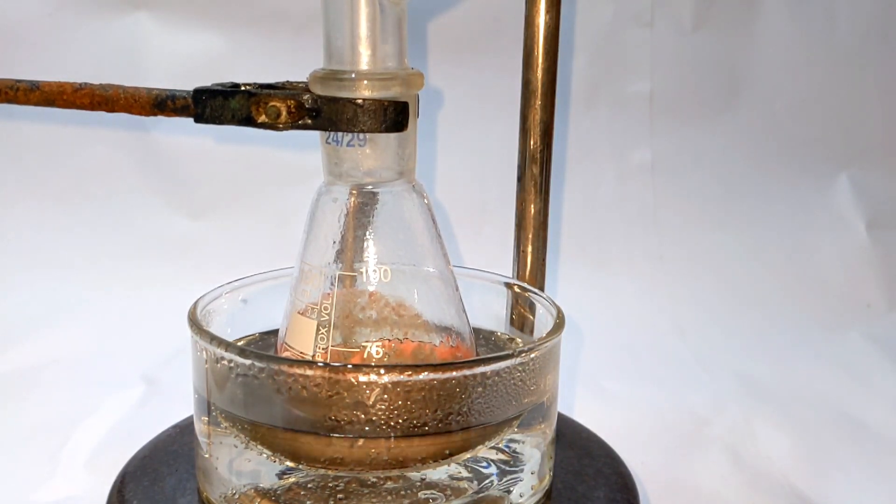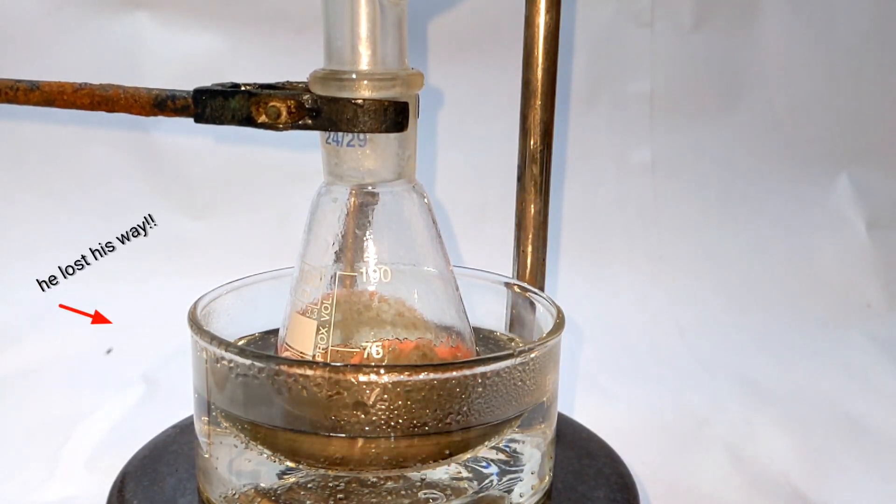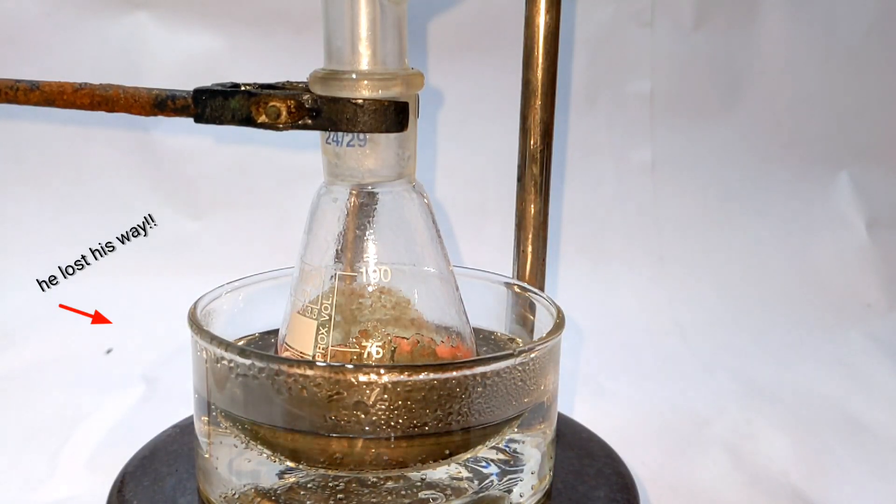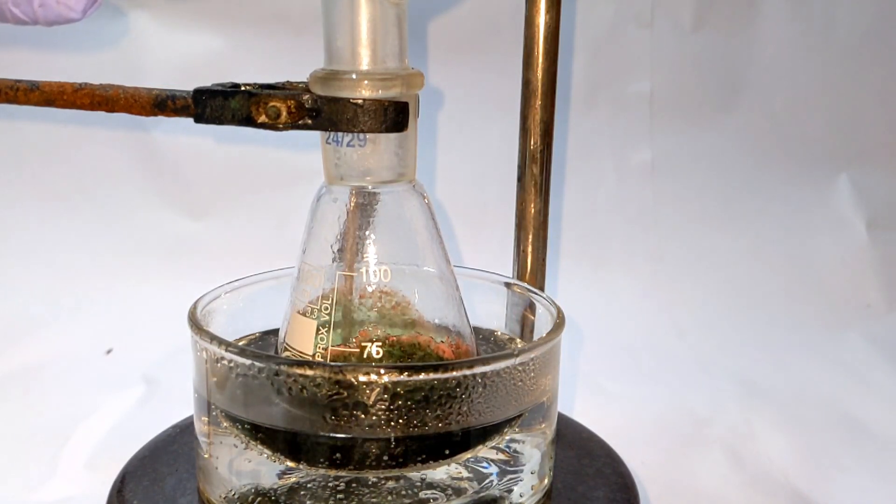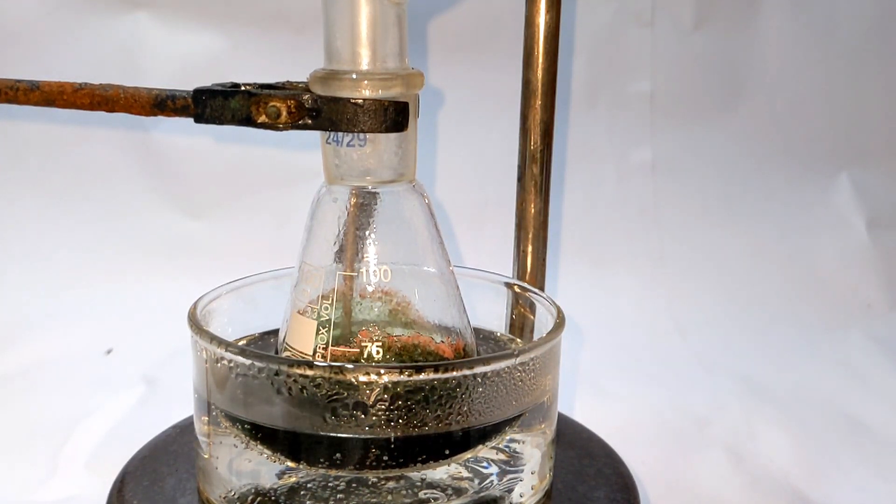You immediately see the color turning dark green and a glistening black colored precipitate is formed. And this is the product Cobalt-Acetyl-Acetonate.